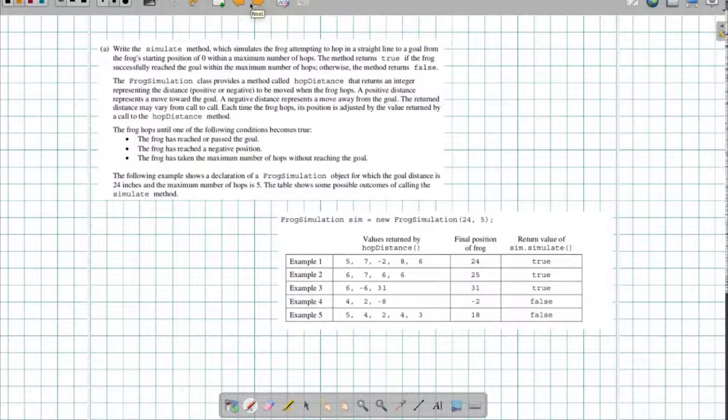So let's talk about what's happening here. For the simulation method, we're going to be starting at a position of zero within a maximum number of hops. We want to return true if we reach our goal within the maximum number of hops, otherwise we're going to return false. So if we exceed our goal, then we're good. It's just that if we end up falling short of our goal, then of course we're going to return false.